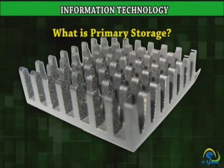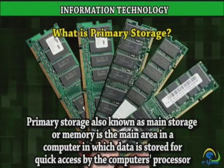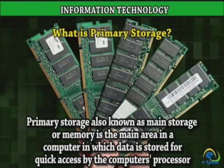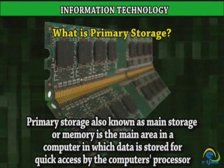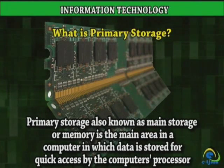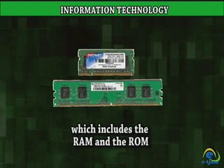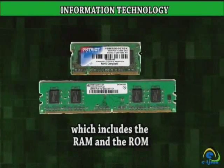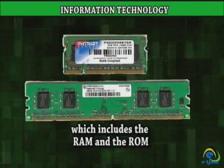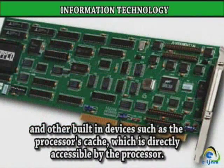What is Primary Storage? Primary Storage, also known as Main Storage or Memory, is the main area in a computer in which data is stored for quick access by the computer's processor. This includes the random access memory (RAM) and the read-only memory (ROM), and other built-in devices such as the processor's cache, which is directly accessible by the processor.